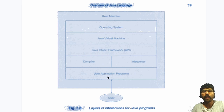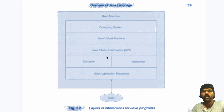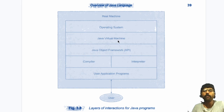Whenever the user runs a Java program, the Java object framework or API works like a layer between the Java Virtual Machine and the user or program. Whereas the Java Virtual Machine — JVM, as we call it — works like a layer between your OS and the program.